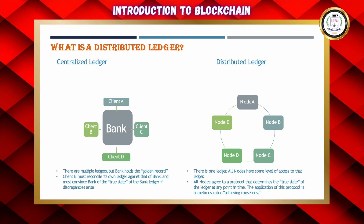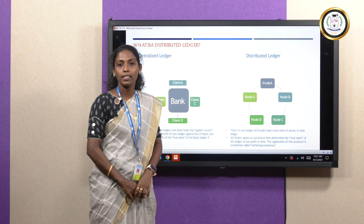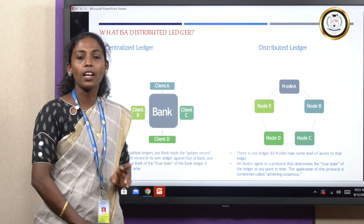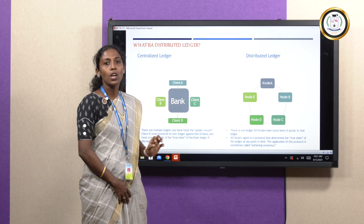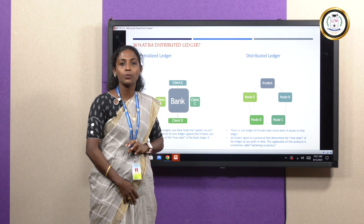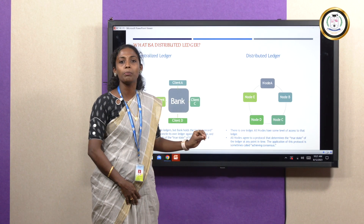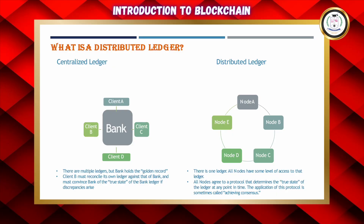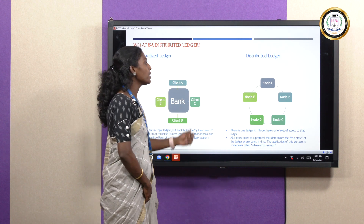Blockchain plays a major role as a distributed ledger technology. Comparing centralized ledger with distributed ledger: in a centralized ledger, there is a central authority — for example, a financial institution like a bank — which holds all client details, and without the bank's approval the client cannot transfer money. But in Blockchain, all nodes play both client and server roles, each node having responsibility as both. When node D requests data, nearby nodes can share data with it, so there is no central authority — that is what makes it a distributed ledger.